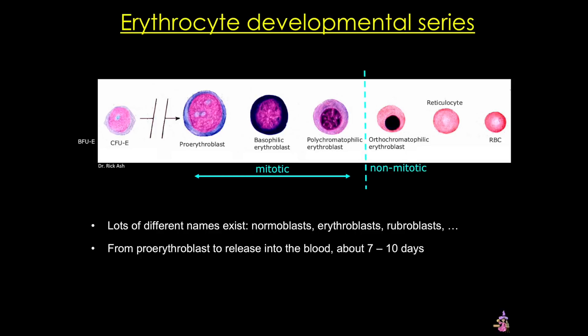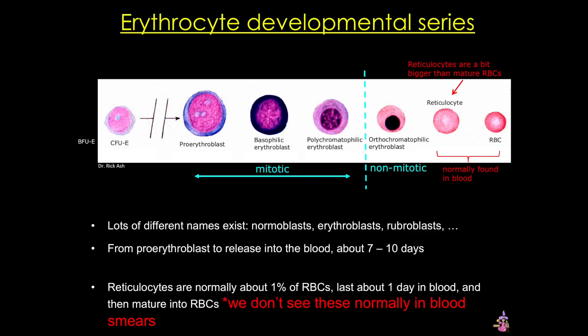As mentioned previously, the ability of these cells to divide decreases as the cells mature, and in this case the polychromatophilic erythroblast is the last cell in the lineage capable of dividing. The two cells that are normally found in the blood are the reticulocyte and the mature red blood cell, but we don't usually see reticulocytes in our blood smears due to staining and due to the fact that they mature very rapidly in the blood. Finally, erythropoietin is the major cytokine to affect this lineage, and it has its effects fairly early in the lineage — in the very early colony forming unit until the pro-erythroblast stage.